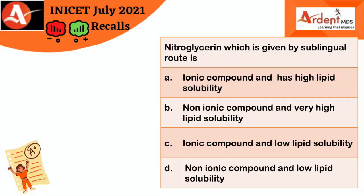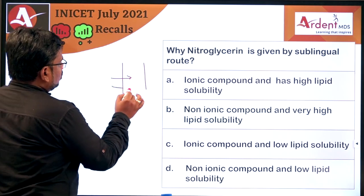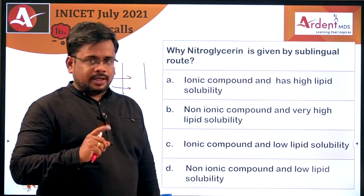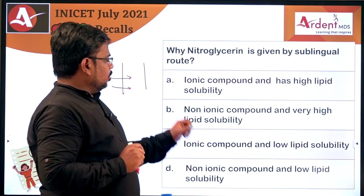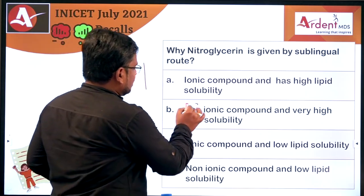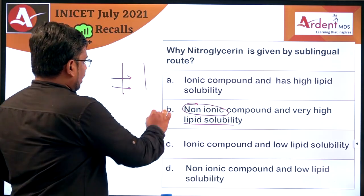The next question: why is nitroglycerin given by the sublingual route? This is an application-based question. Nitroglycerin is given sublingually to avoid first-pass metabolism. For any molecule to cross the membrane and enter blood vessels to provide rapid action, it should be lipid soluble and non-ionic. Non-ionic components cross the membrane easily due to lipid solubility. So the answer is lipid solubility.